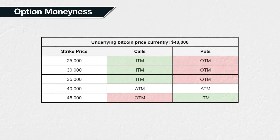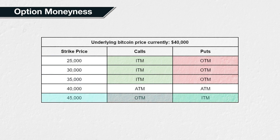Now, let's assume the price of Bitcoin increases from $35,000 to $40,000. The table can be updated like so. With the price of Bitcoin now at $40,000, the $40,000 call and the $40,000 put are both at the money. For any strike price below the current Bitcoin price, calls are in the money and puts are out of the money — this now includes the options with a strike price of $35,000, because the Bitcoin price is now above this strike. For any strike price above the current Bitcoin price, calls are out of the money and puts are in the money — this is now just the $45,000 strike options.